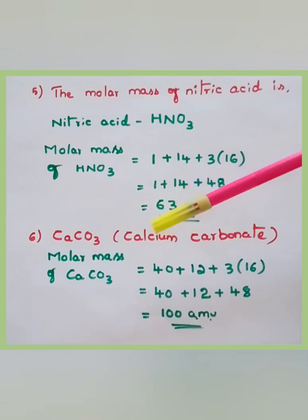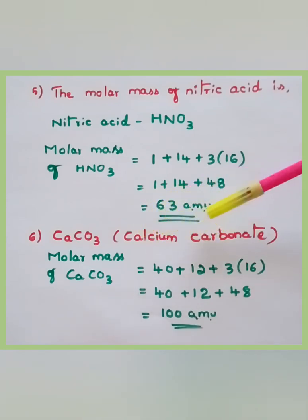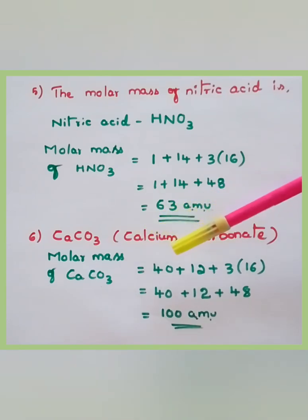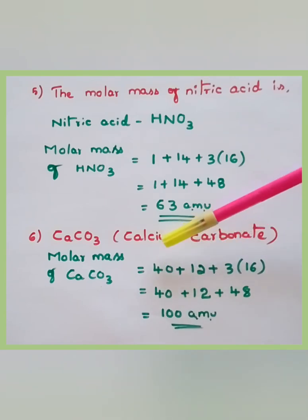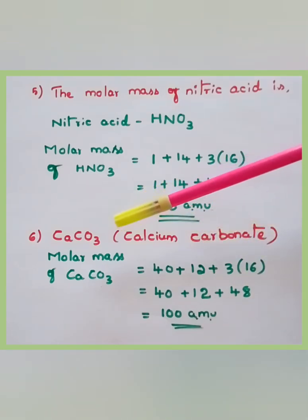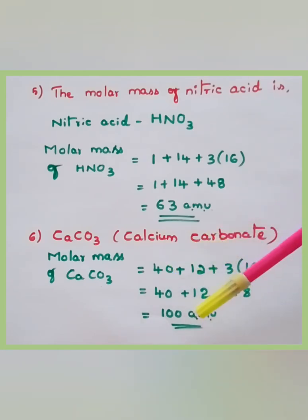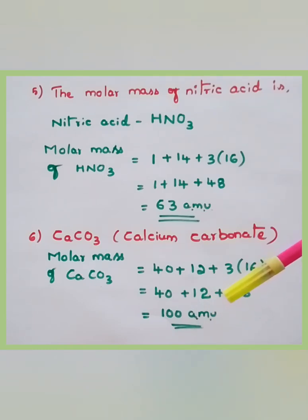Next: find the molar mass of calcium carbonate, CaCO₃. Atomic weight of calcium is 40, carbon is 12, oxygen is 16, and oxygen appears 3 times. Molar mass = 40 + 12 + 3×16 = 40 + 12 + 48 = 100 amu.